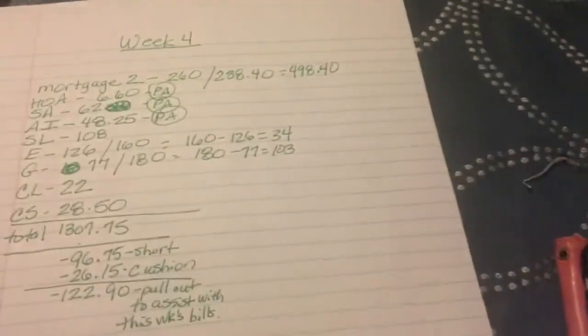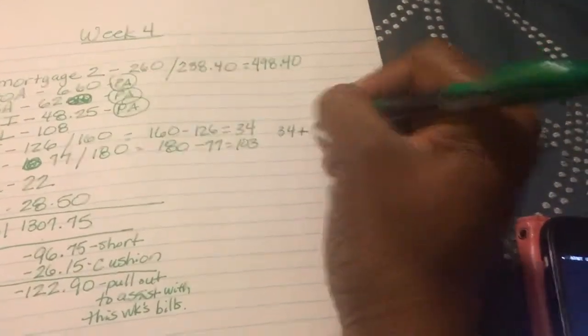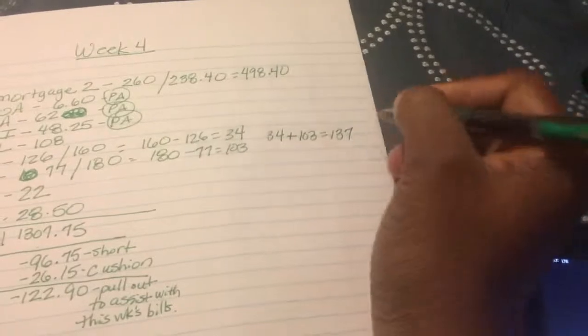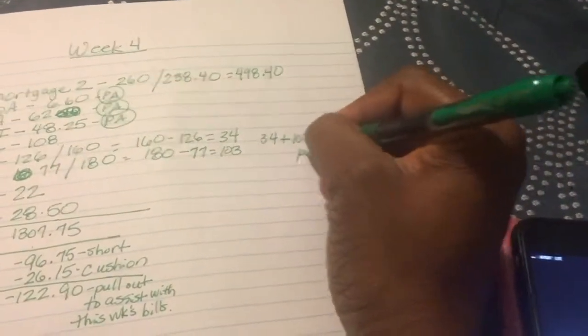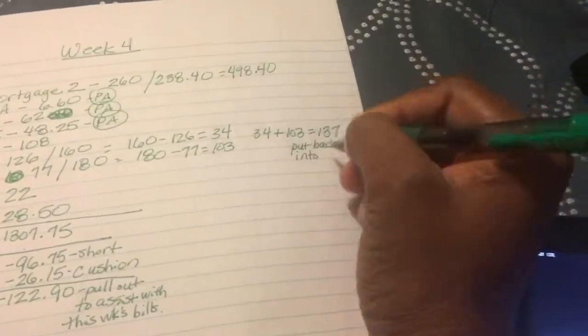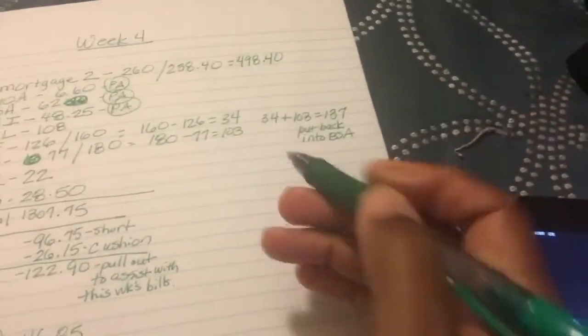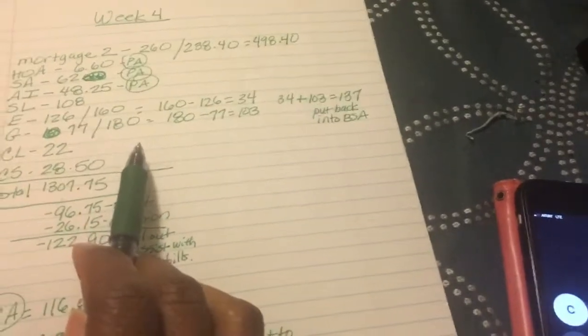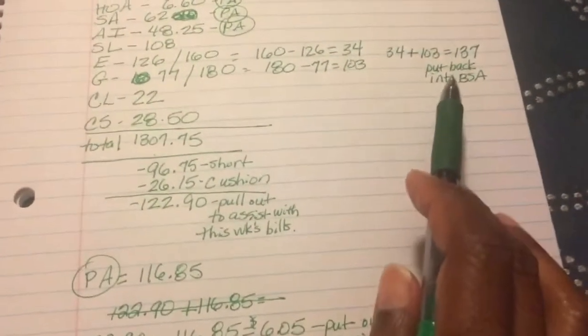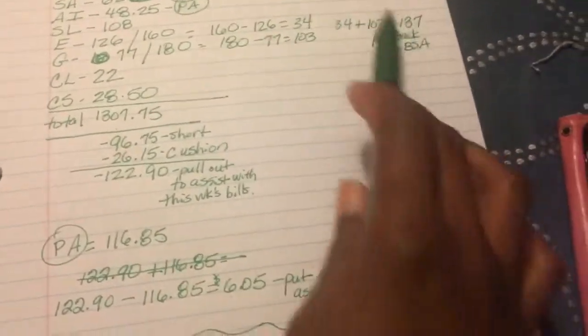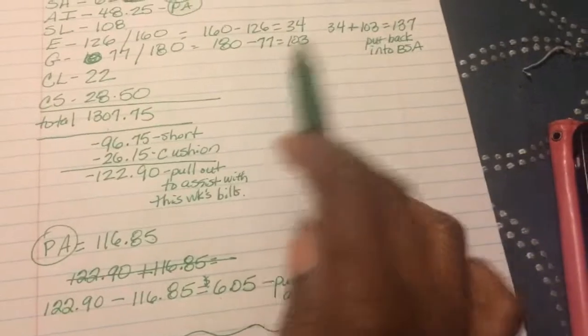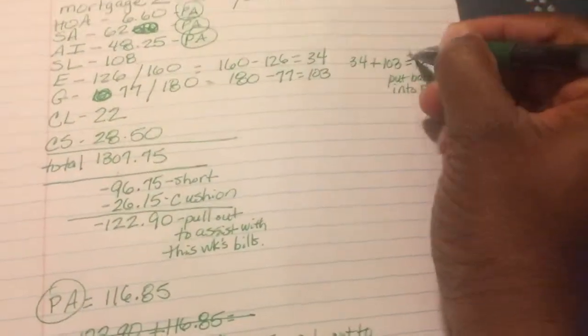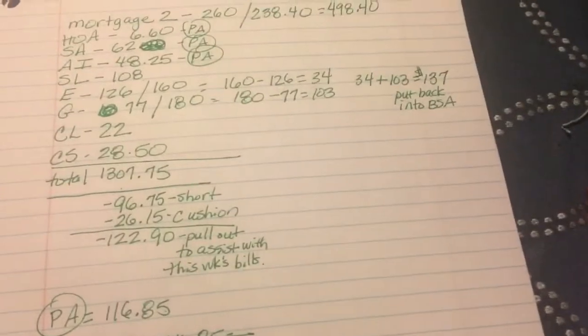So now these two totals, the $34 plus the $103, which is going to be what? $137, I need to put that back into my bill savings accounts. Because remember, this is an average amount. So some months it's going to be higher, some months it's going to be lower. So I will need to pull this amount out if it's higher from my extra amounts that are left over some months. So in actuality, this $137 will need to go back into the bill savings account.